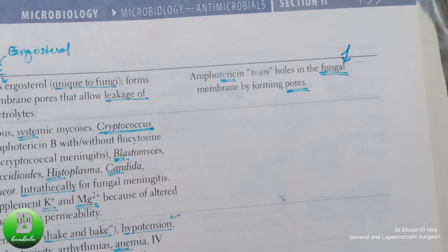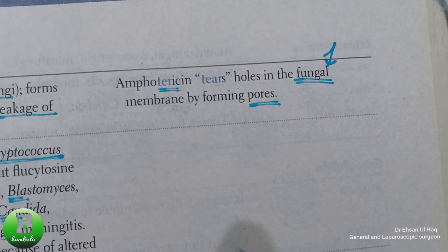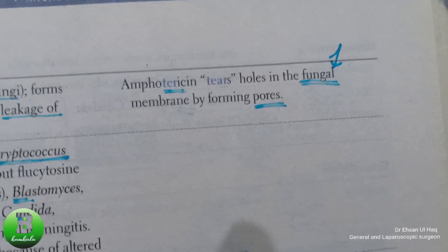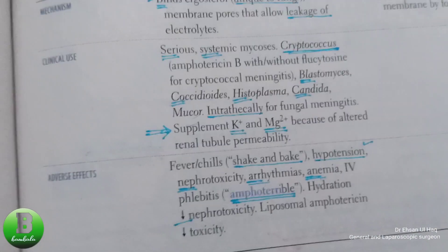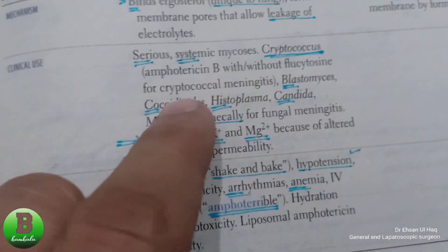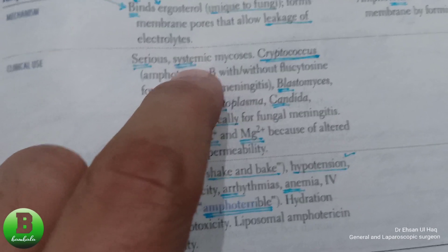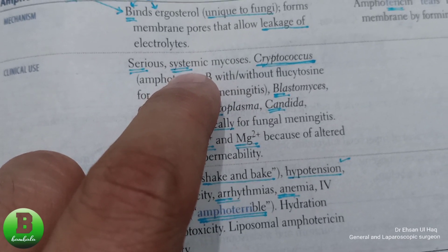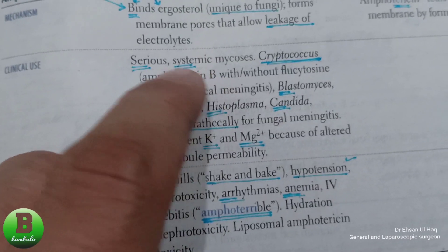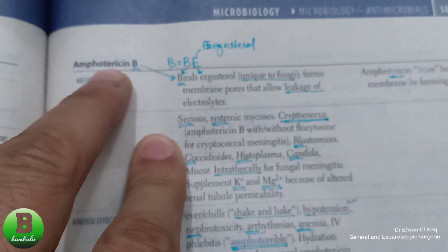Amphotericin B tears holes in fungi. The clinical use is for serious systemic mycosis — this is the primary indication for Amphotericin B.